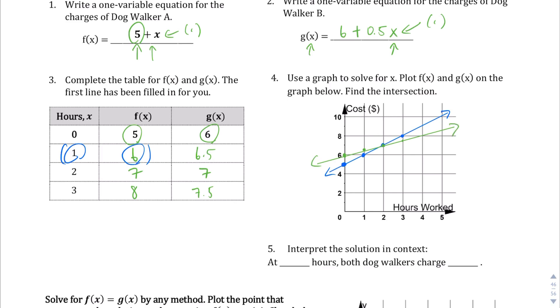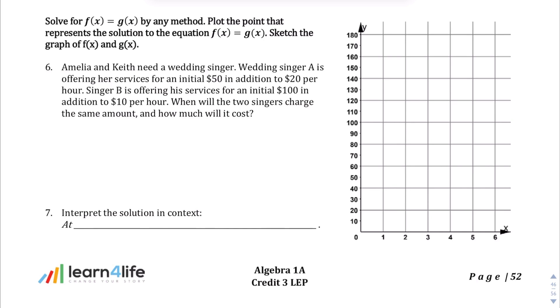So interpret the solution in context. So at, so our intersection point is right there. So at two hours, both dog walkers will charge $7. And we can see that right here as well. At two hours, both dog walkers charge $7. Okay, so for question number six, we're actually going to go ahead and just keep using Desmos because a couple of reasons, it's a little bit inconvenient to figure out how to graph this thing. But since they had us use Desmos previously, I'm going to continue that. It's just easier, plus we get some practice, and I like it. It's fun. So let's keep going with that.